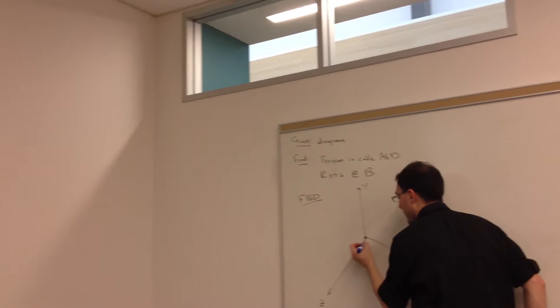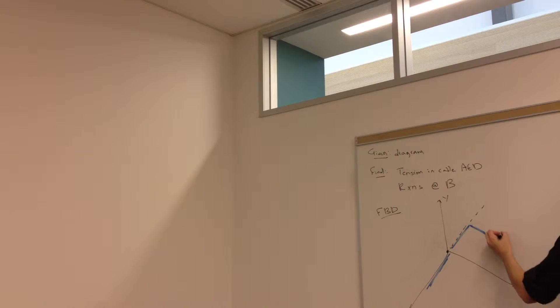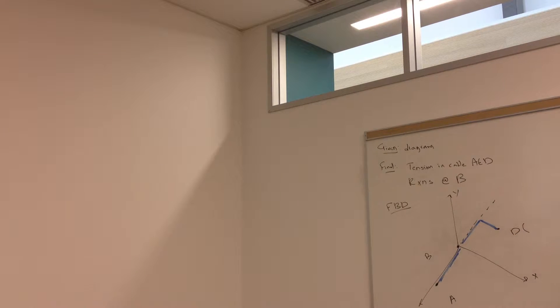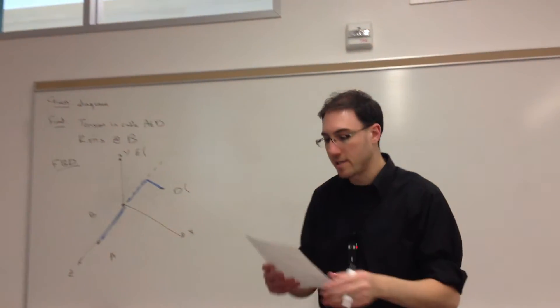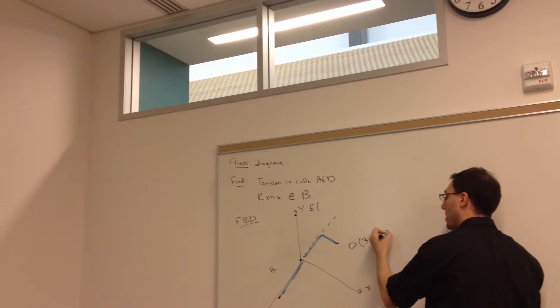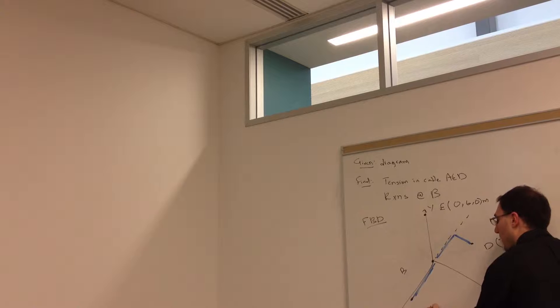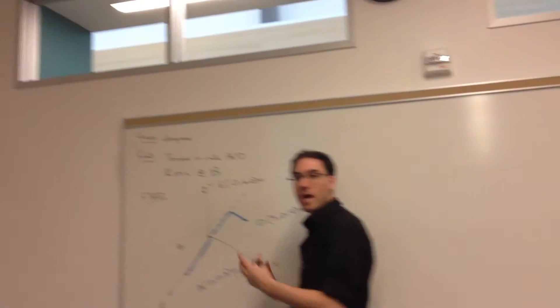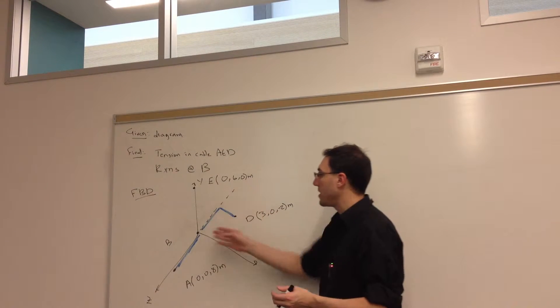So I'm going to keep the coordinate system that we're given. I don't want to keep the shaft because I can't see what's happening at B. So A, B, C, D will be the object. The important points I need to put here are D, B, A, and because I have a rope that goes from A to E and from D to E, I'll also need E in my picture. I'll put all the coordinates down. So D is at (3, 0, -2), E is at (0, 6, 0), B is at the origin, and A is at (0, 0, 8).